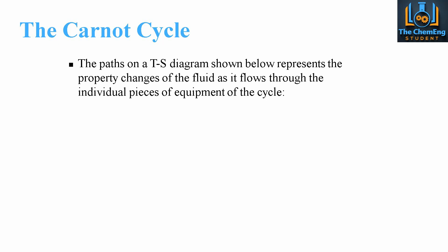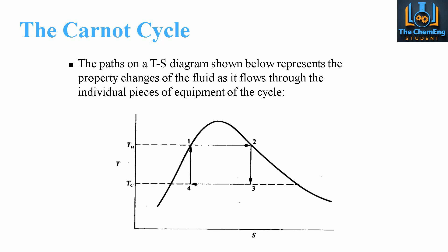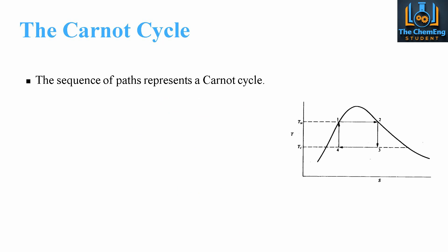The path on the TS diagram represents the property changes of the fluid as it flows through the individual pieces of equipment within the cycle. We see a characteristic rectangular shape — this is our Carnot cycle — and this is the saturation curve for a given set of chemicals, which could be for steam or a refrigeration cycle. We can also have a PV diagram: here we plot temperature against entropy of the system.